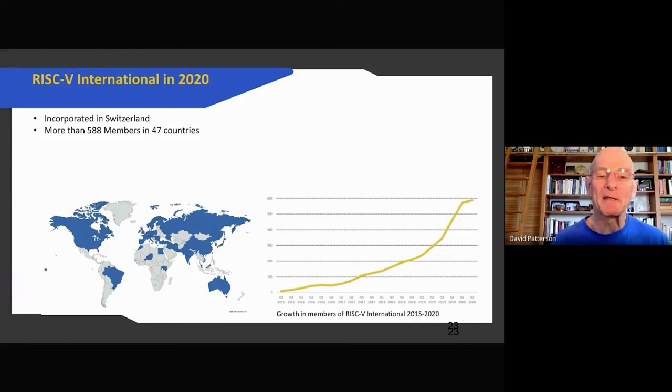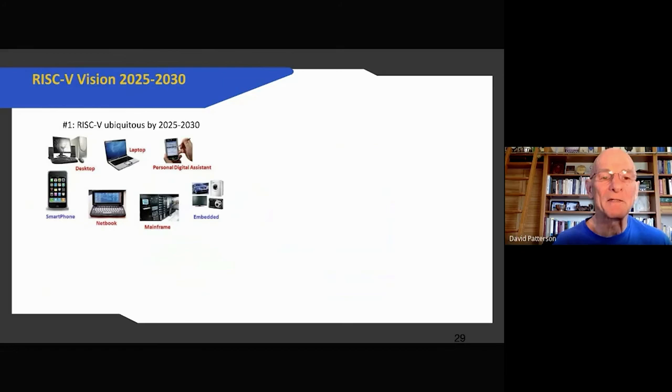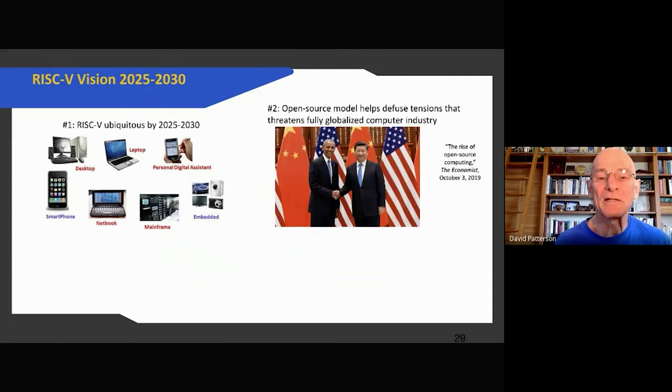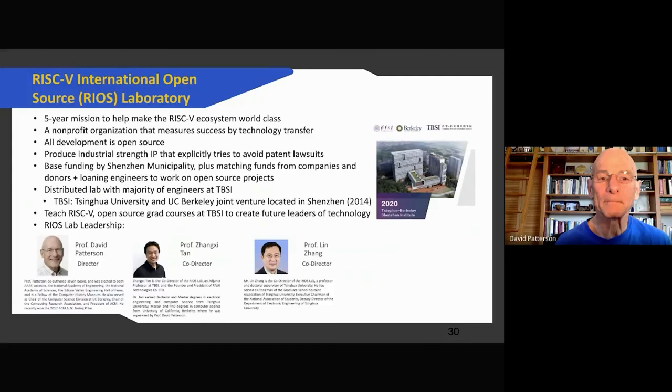So my vision for RISC-V is that it'll be everywhere, in internet of things devices all the way up to supercomputers. But there's a secondary vision: that by having open source, that we can collaborate across the world, thoroughly globalizing the computing industry. We might reduce tensions if you're working with people all over the world in open source hardware and open source software. Maybe that'll make it easier for us to collaborate across the world and reduce some of the tensions that have come up.